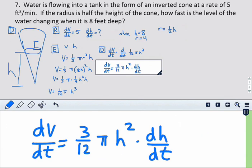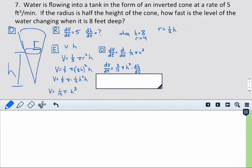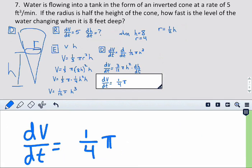So, dh dt. And, of course, the three-twelfths can simplify. So, we'll get dv over dt equals one-fourth pi h squared dh dt.